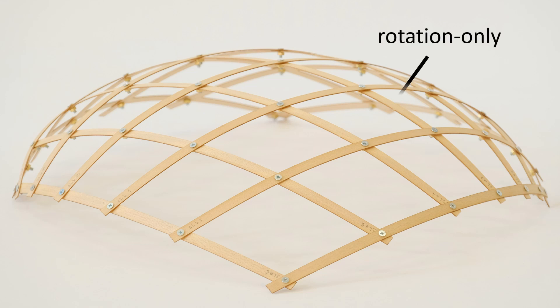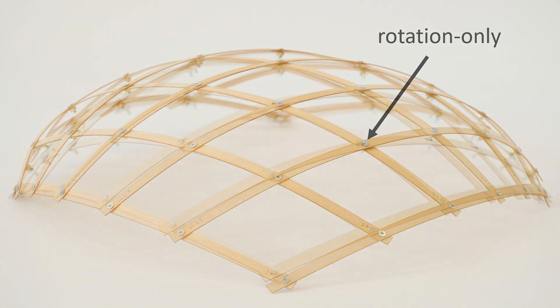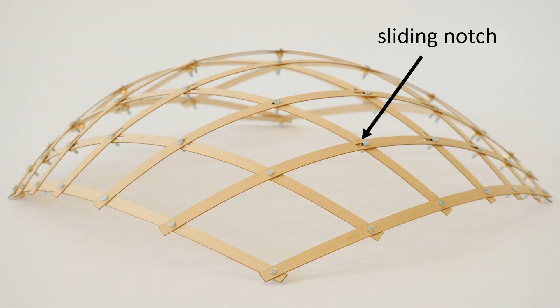Having rotation-only connections makes it generally impossible to find a planar grid that approximates the surface well. We therefore allow a subset of the inner connections to slide, thus increasing the joint's abilities by two translational degrees of freedom.